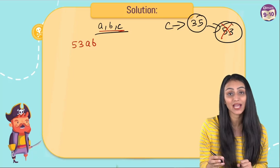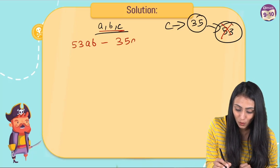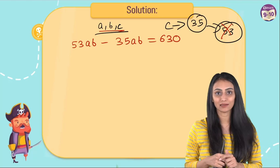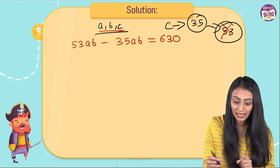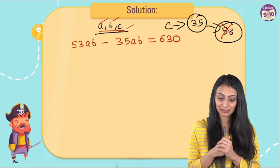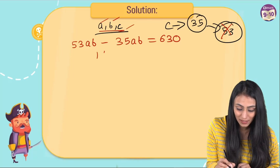The difference between both of them in that case I can say is actually equals to 630. Because on multiplying a, b, and the third number as 53, we get 630. So let's quickly simplify this: 53ab minus 35ab is going to be 18ab.